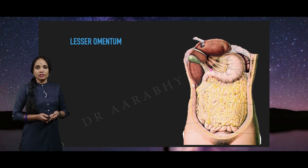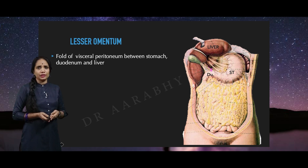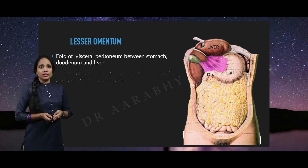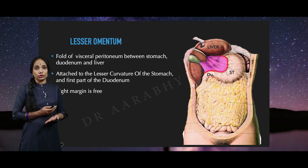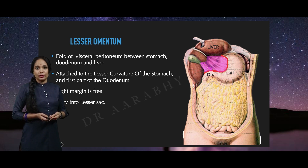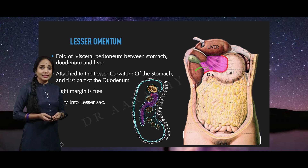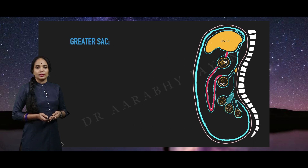Now let's see what the lesser omentum is. The lesser omentum is basically a fold of visceral peritoneum which stretches between the stomach, the duodenum, and the liver. There you have the lesser omentum. The lesser omentum is attached to the lesser curvature of the stomach and has a right free margin on the liver side. Free margin means it is not attached or closed, and this free margin forms the communication between the greater sac on the outside and the lesser sac which lies behind the lesser omentum — that is the entry point of the lesser sac. The greater sac communicates with the lesser sac through this free margin.